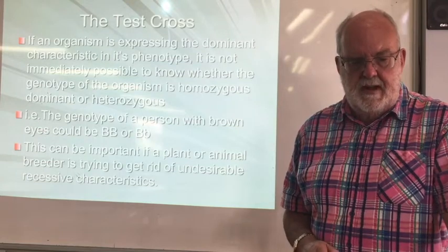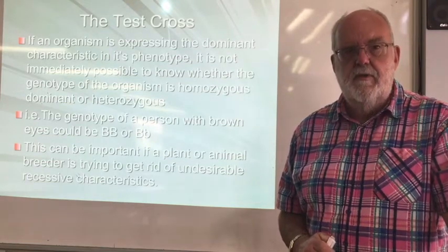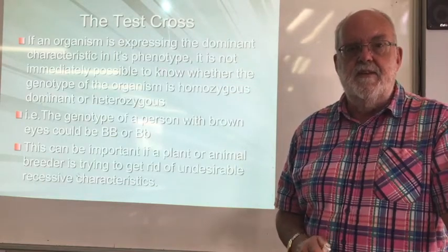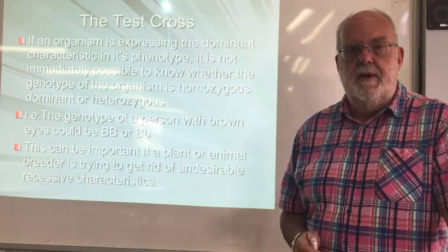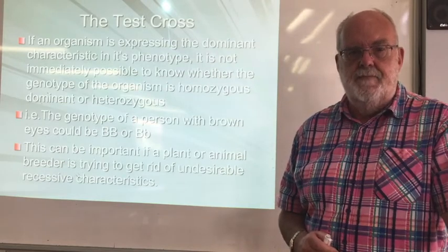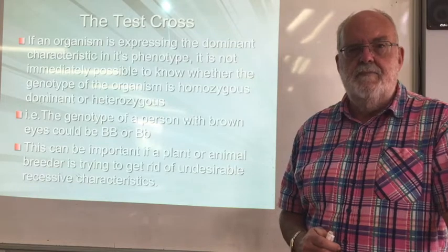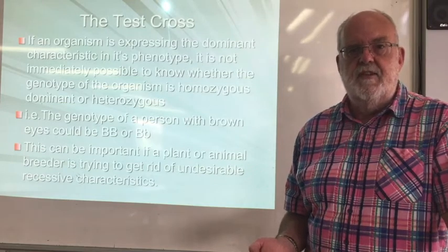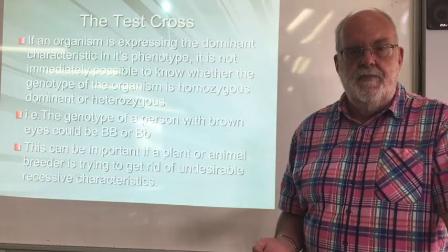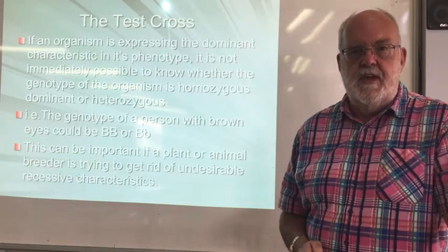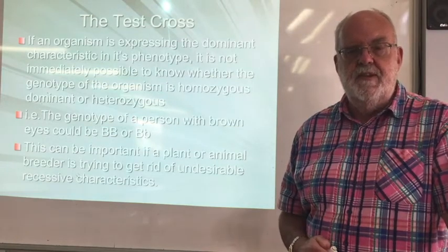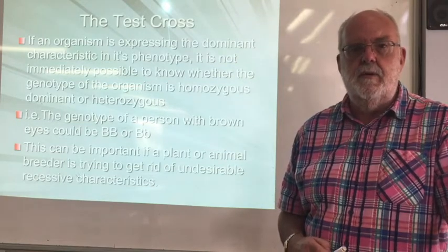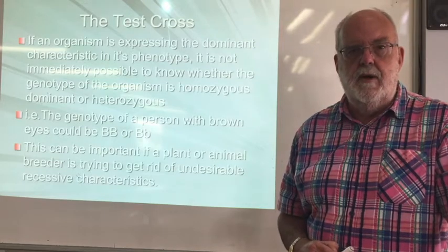This can be important if a plant or animal breeder is trying to get rid of undesirable recessive characteristics. If the recessive allele happens to produce something that is undesirable — for example in sheep it might be a dark wool colour — if you're a sheep breeder breeding sheep for wool, basically what you want is white wool because that's going to be much easier to turn into dyed cloth. So an ideal sheep farmer is going to know that all his sheep are always going to be white.